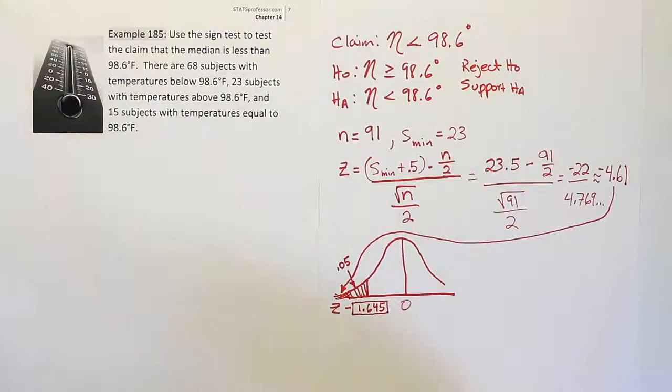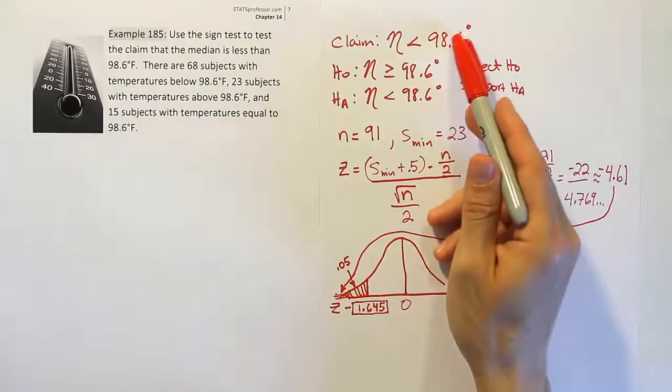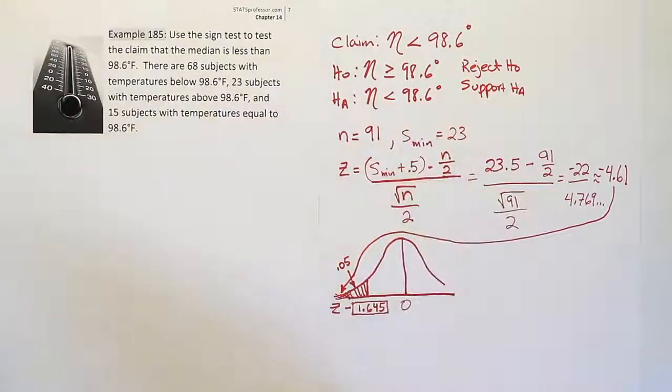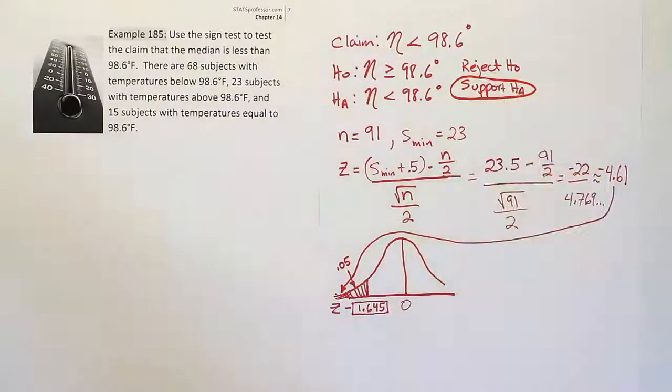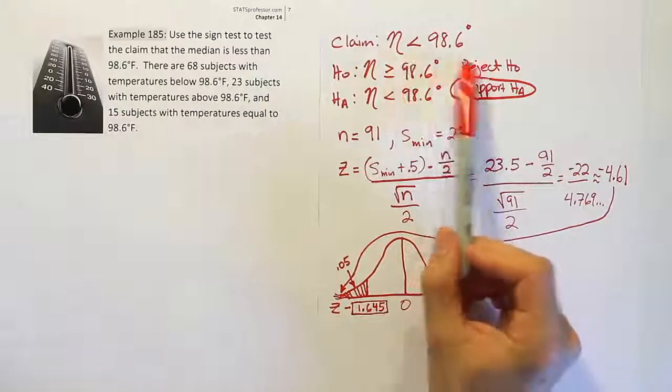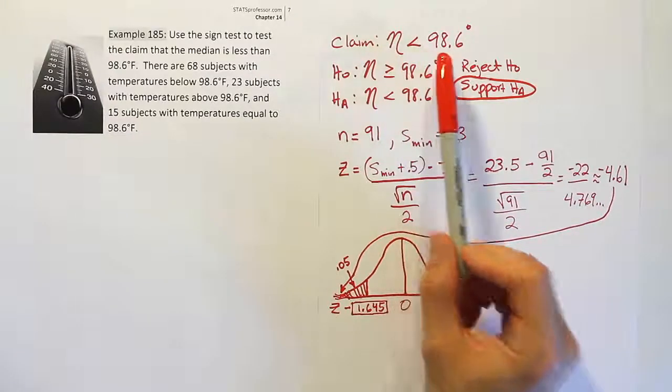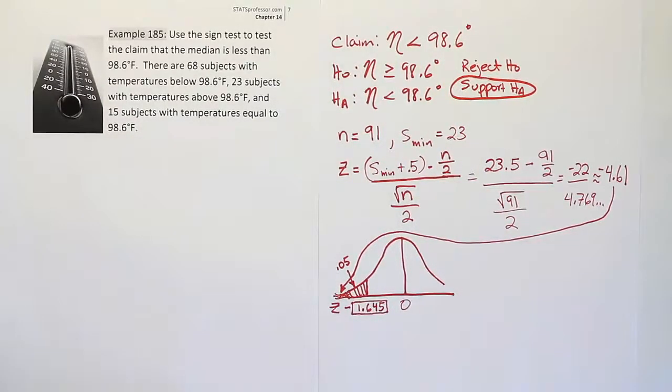With that in mind, we're going to look at the claim and say the claim is the same as HA. We should support the claim, and what we're supporting is the idea that the median is below 98.6. So the median body temperature appears to be below 98.6.